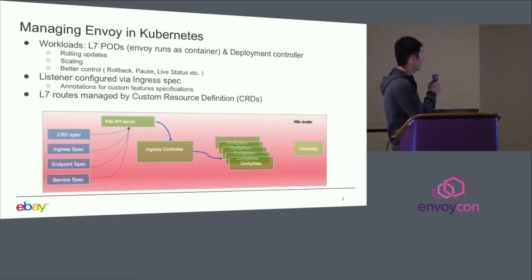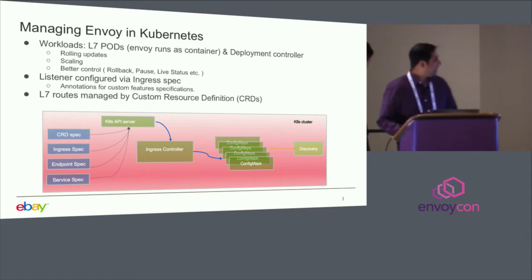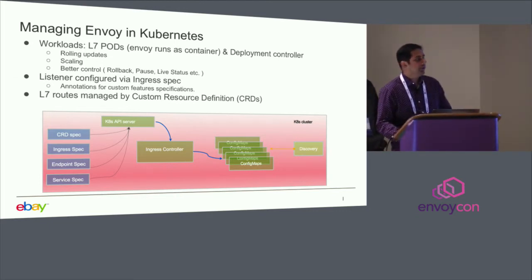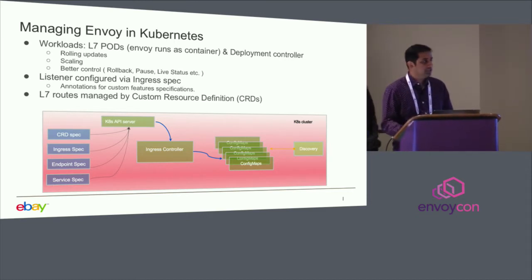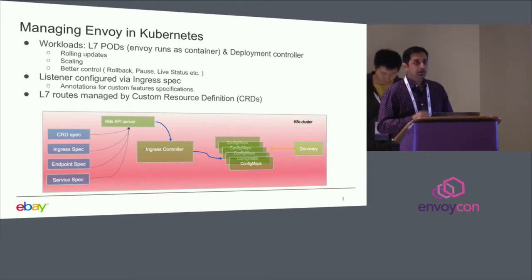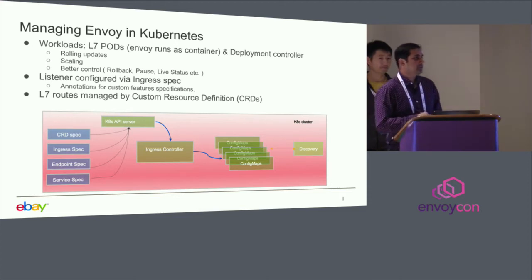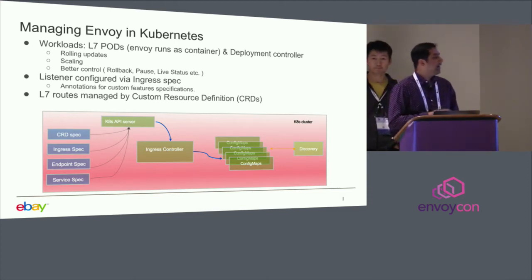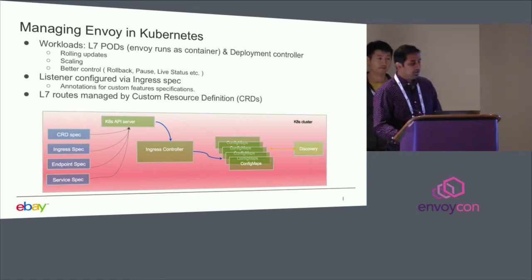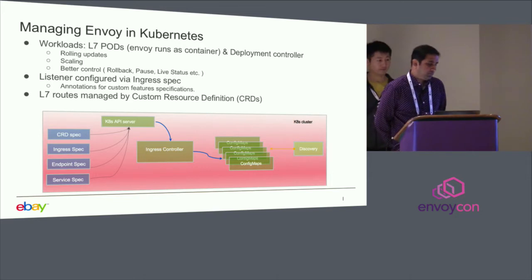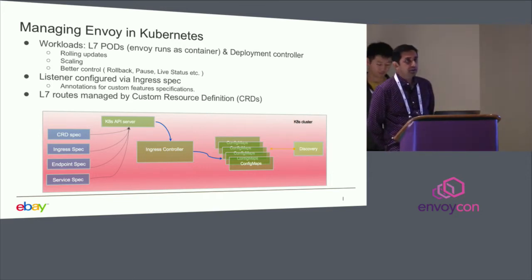Next, my colleague Bala is going to talk about the L7 aspect of the edge proxy. I'll walk you through in much more detail how we run Envoy, how we manage it, the control plane, how we integrated with Kubernetes, the data plane, what features and optimizations we've done, and also one specific use case we built on top of Envoy called dynamic caching. We run Envoy as a container — it's a pod in Kubernetes — and we run it along with a bunch of other containers I'll be explaining.